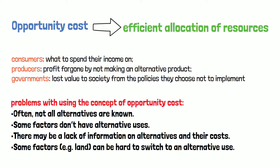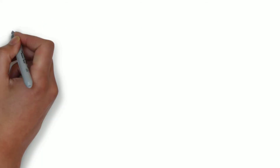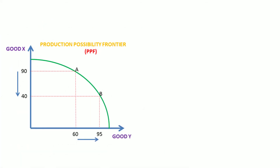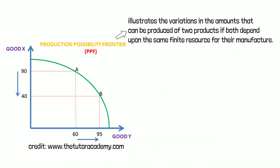In order to better understand the implications of opportunity cost, you must know about a tool widely used in economics: the production possibility frontier. In business analysis, the production possibility frontier, or PPF, is a curve that illustrates the variations in the amounts that can be produced of two goods if both depend on the same limited resource.